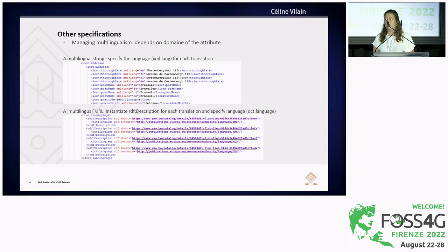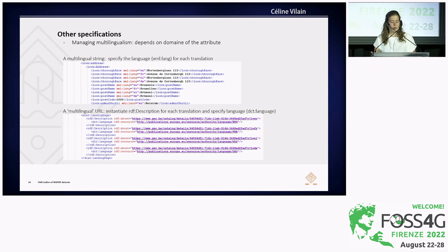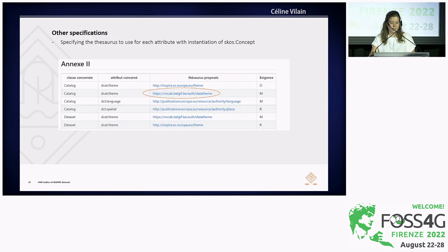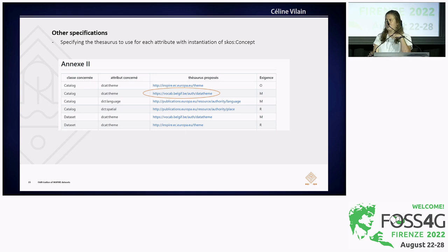We also have to deal with multilingualism because of the three official languages, and we also want to publish in English. When you have a multilingual string, it's easy — you just have to specify the language for each translation. But when you have a multilingual URL, we instantiate the technical element RDF description so that you can fill in the DCT language to specify your URL language. In our profile, we also specified the thesaurus to use when you instantiate SKOS concepts. For a DCAT theme, we also use a specific Belgian thesaurus because it has one or two more themes than the European thesaurus.